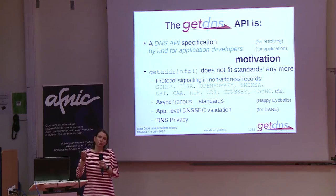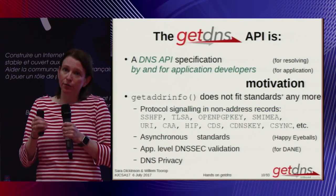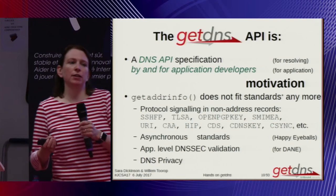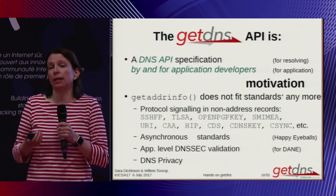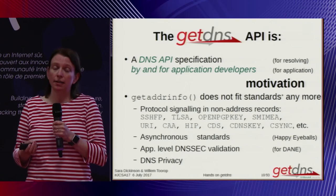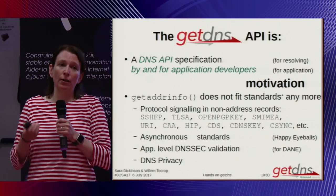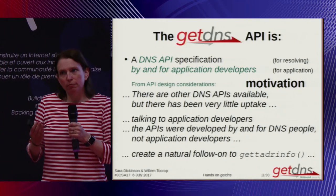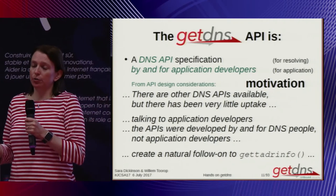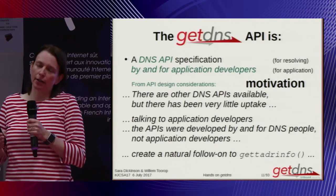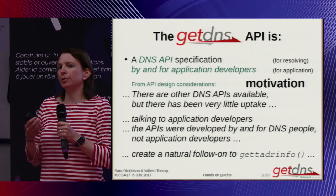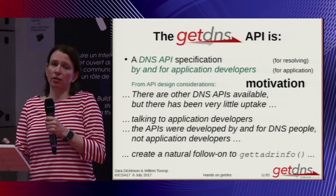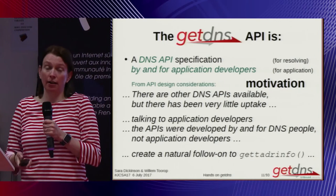What's becoming more important is being able to do DNSSEC validation on the end device as a stub. getaddrinfo can't expose that. Another key feature becoming more and more relevant is the ability to do DNS privacy — meaning today, doing DNS over TLS. There are very few implementations that offer that functionality that GetDNS does. Although there were other DNS APIs around, and some were very good, there was little uptake from application developers. They commented that DNS APIs were written by DNS folks for DNS folks and didn't fit into modern programming structures. So the goal here was to create the successor to getaddrinfo in that context.